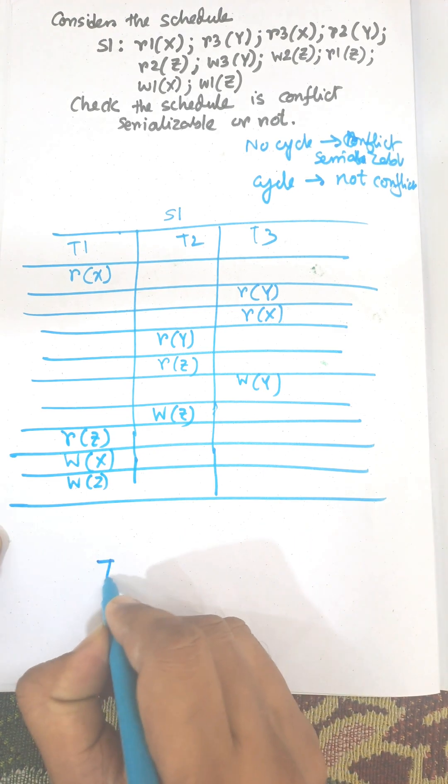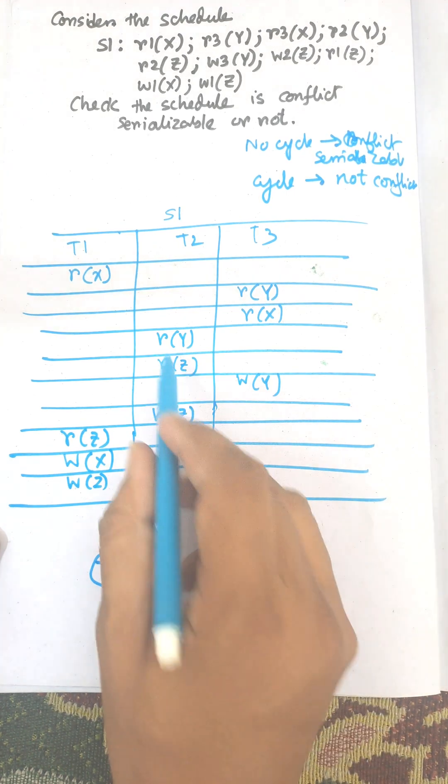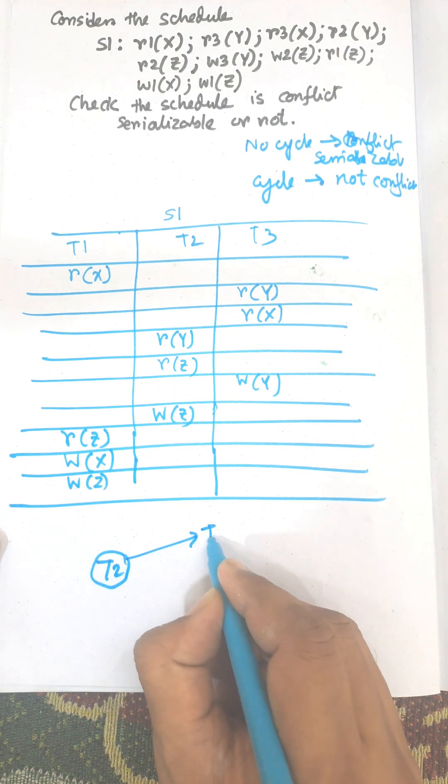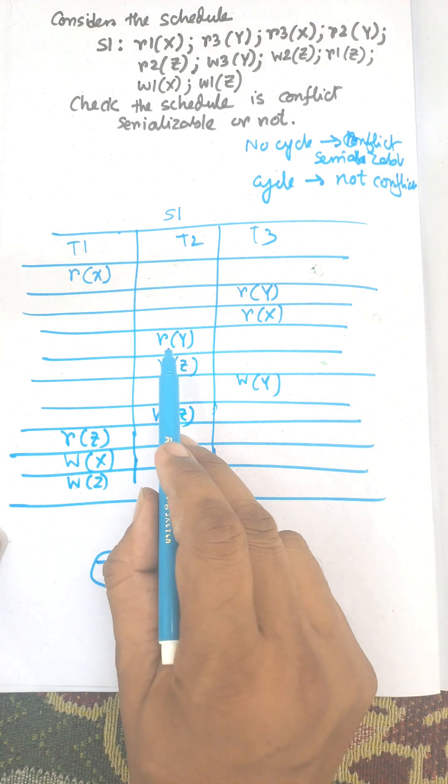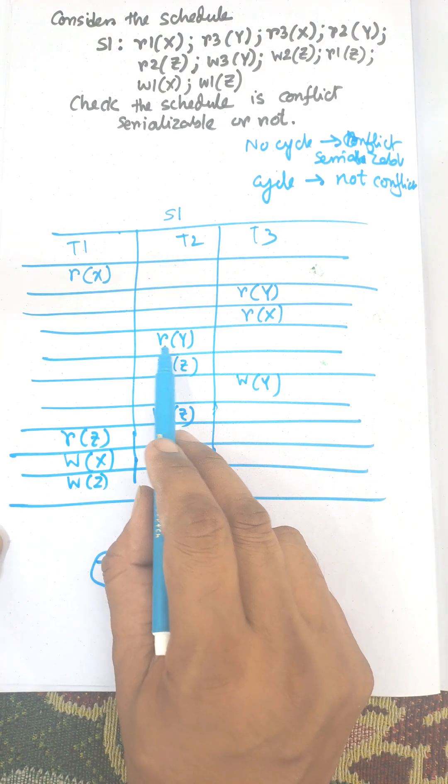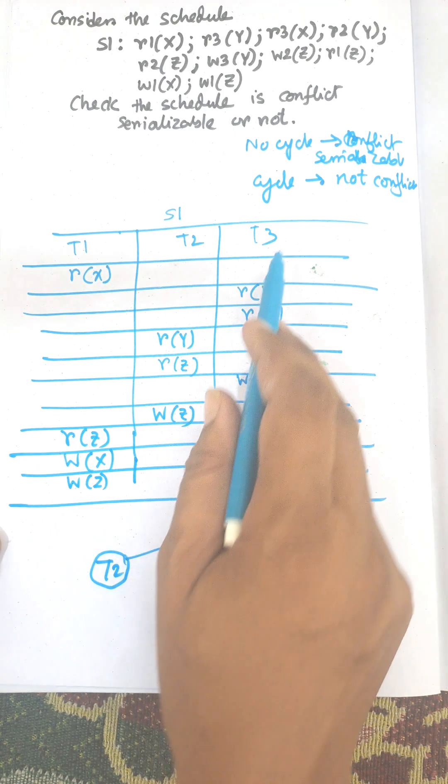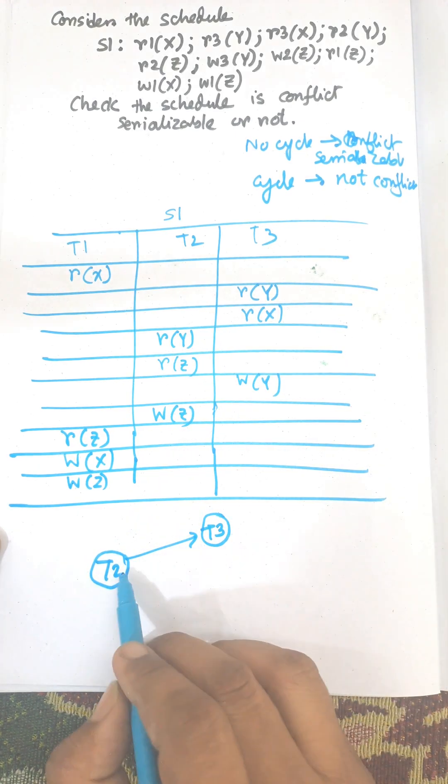So T2 is a node and it points to T3. So T1 and T2 and T3 are connected by an edge, as the data read by T2 transaction is written by T3 transaction. So T2 to T3.